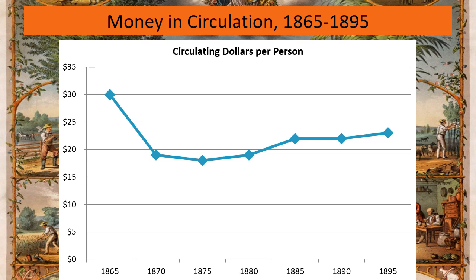It dips to a real low in 1875 of about $17 per person and then starts steadily rising again as silver is introduced into the economy. In 1895, it reaches somewhere around $24 per person, but it will never go back to the Civil War amount.